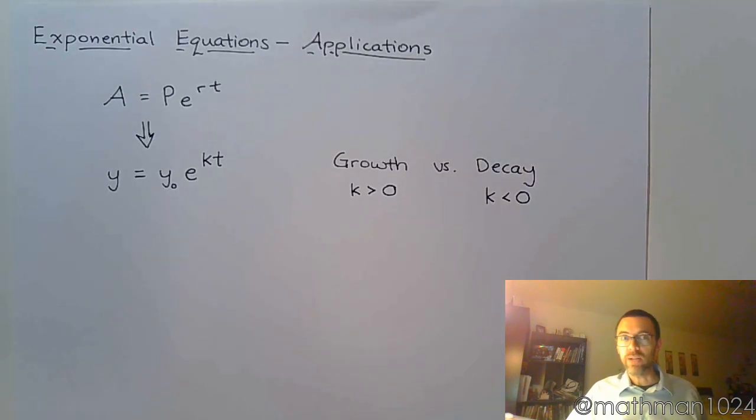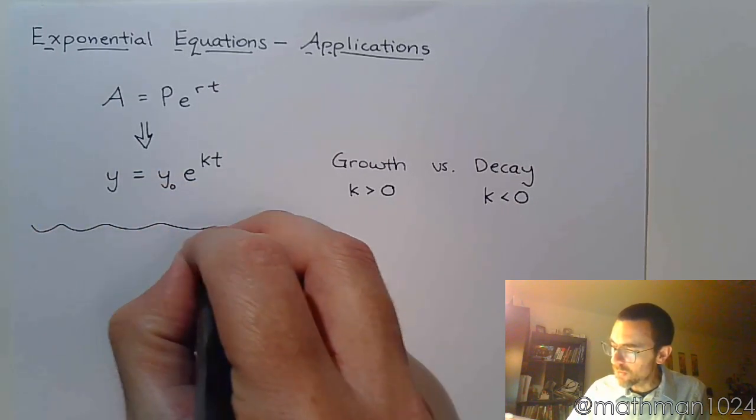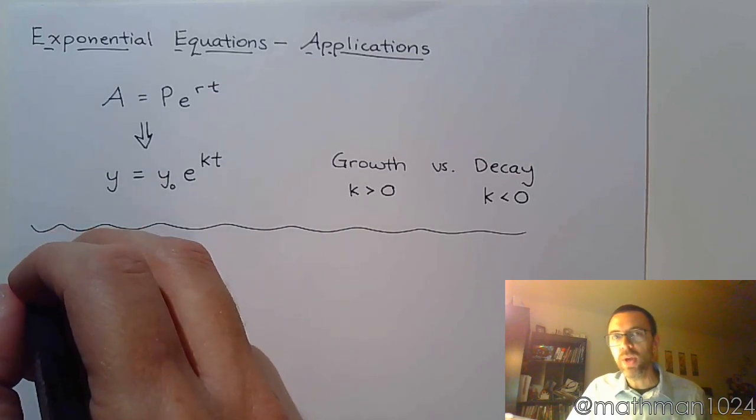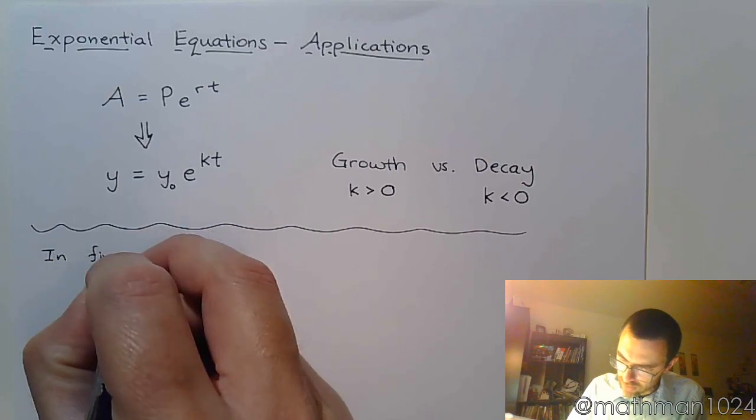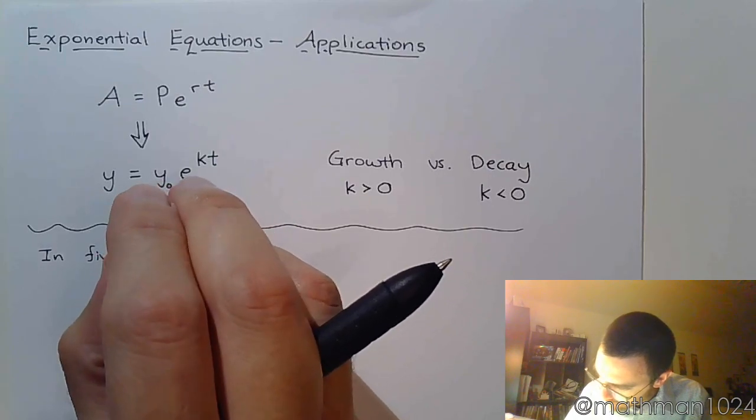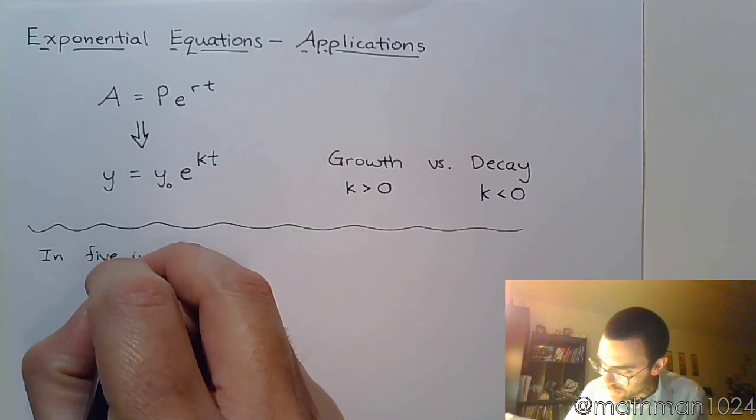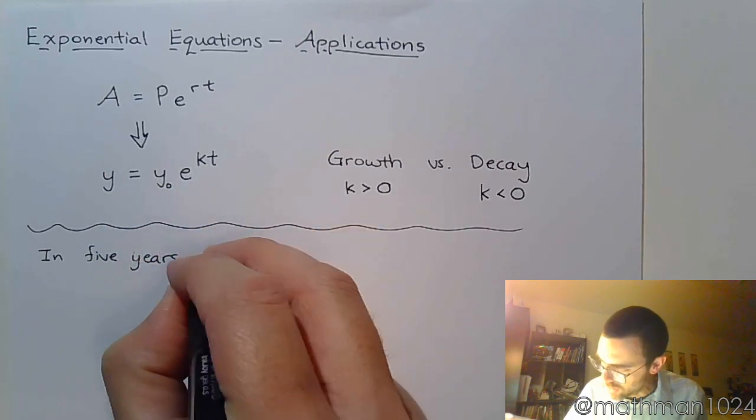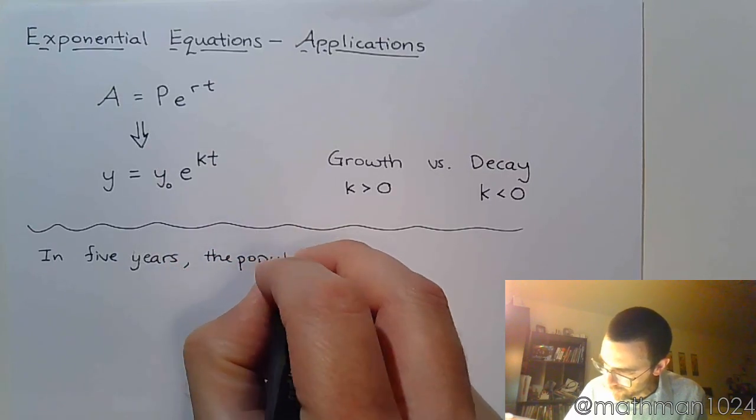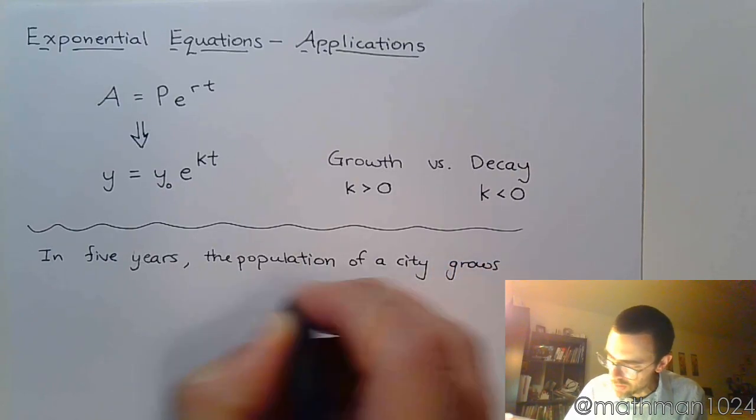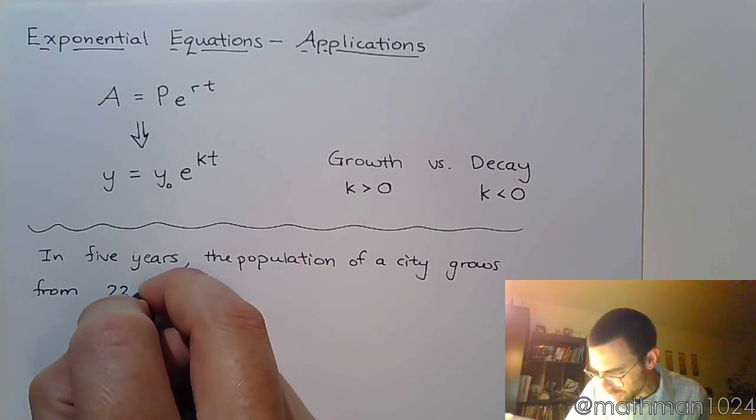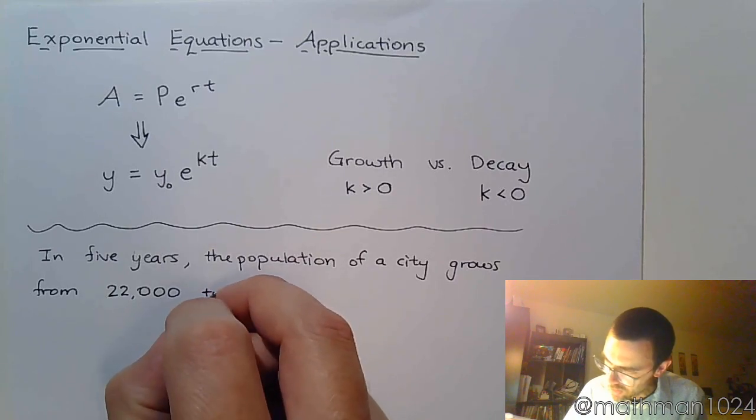Of course, y is just going to be that final amount. We can actually turn this into a function; it is exponential, but we're not really going to worry about that too much right now. Let me show you how we can use this for all kinds of fun problems. Suppose you have a population of a city that is growing exponentially. In five years, the population of a city grows from 22,000 residents to 30,000 residents.